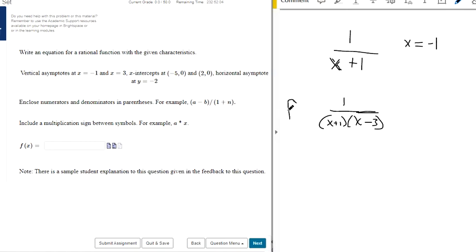X-intercepts happen when we plug in zero for y and solve. We need to plug in zero for f of x, and then we got to write something up top in the numerator.